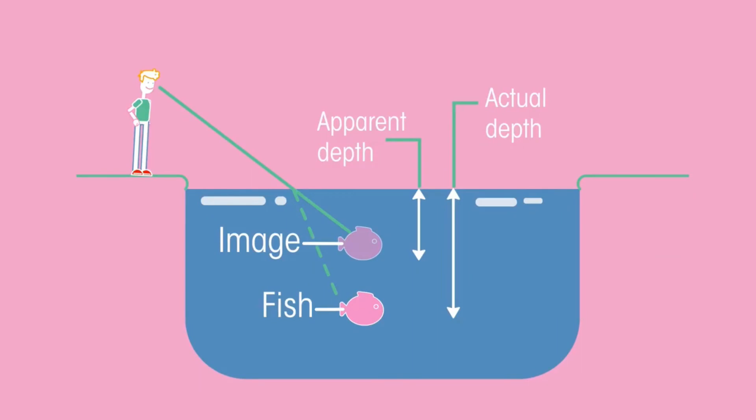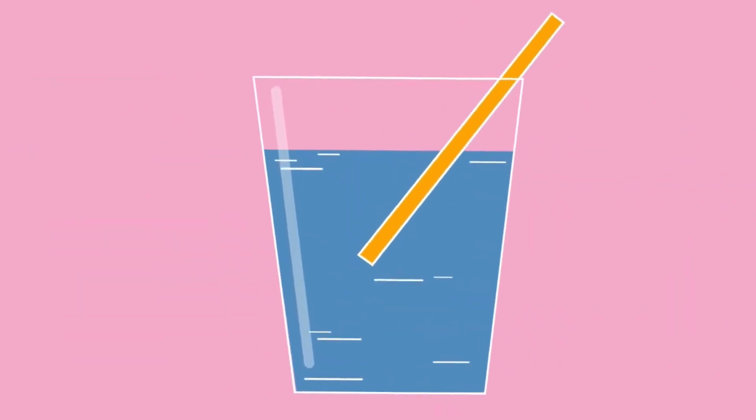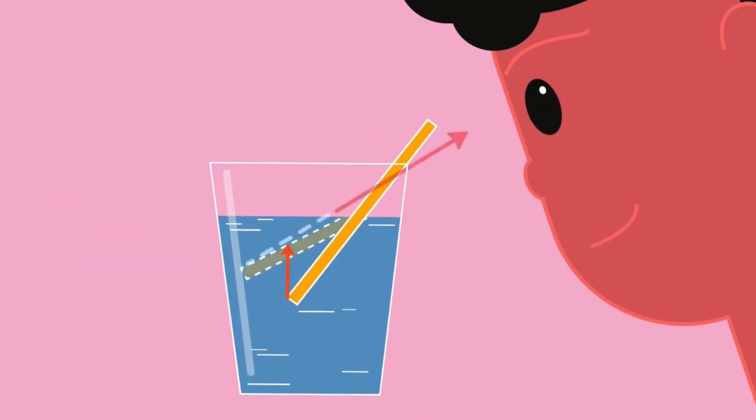Because of refraction water looks shallower than it really is, and a straw in a glass of water looks like it bends at the surface. The light ray refracts as it leaves the water making the straw appear bent.